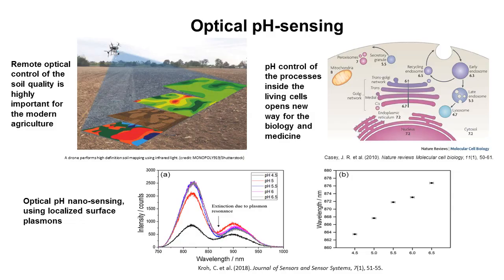The remote control of pH of the medium is a vital task for a multitude of applications in chemistry, biology and medicine. For example, this is very important for the control of soil quality for agriculture and pH strongly affects the processes inside living cells. pH control of the processes inside living cells opened a new way for biology and medicine.